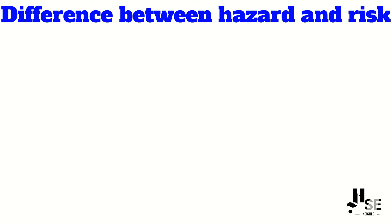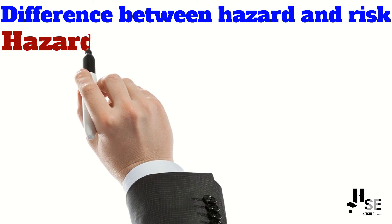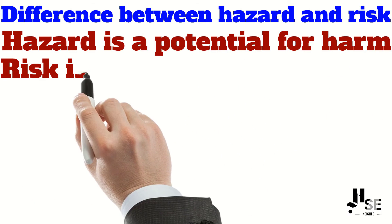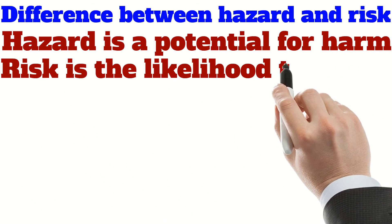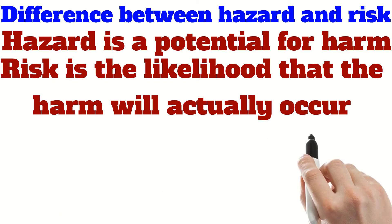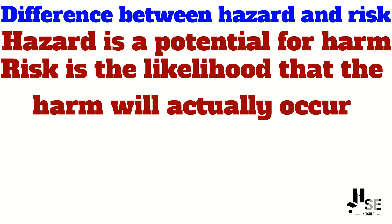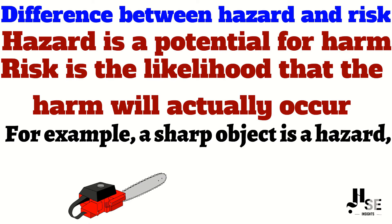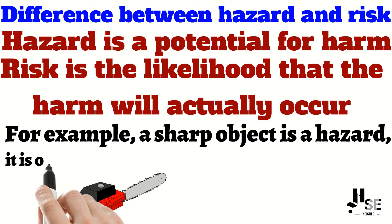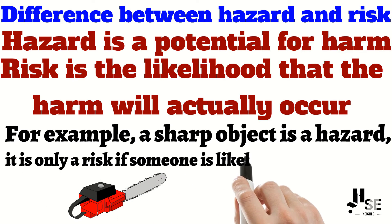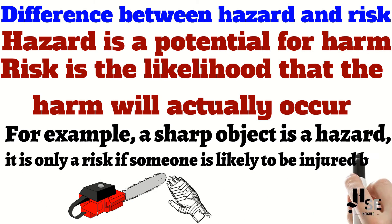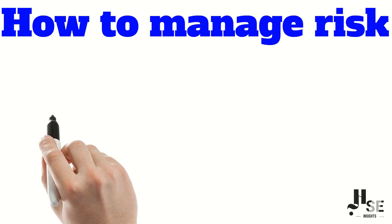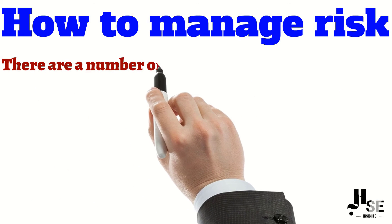The main difference between hazard and risk is that a hazard is a potential for harm, while a risk is the likelihood that the harm will actually occur. For example, a sharp object is a hazard, but it is only a risk if someone is likely to be injured by it.